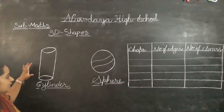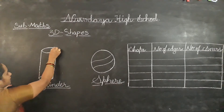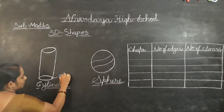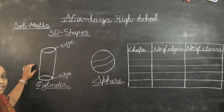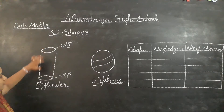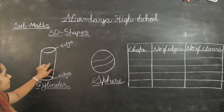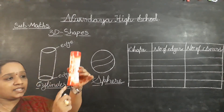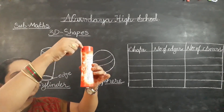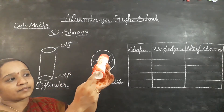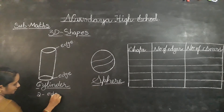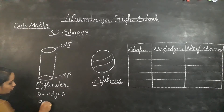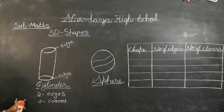Now the next one is cylinder. A cylinder has two edges — those are circular edges. A cylinder does not have any corner. A cylinder has two circular faces and one curved face. So a cylinder has 2 edges, 0 corners, two circular faces and one curved surface.